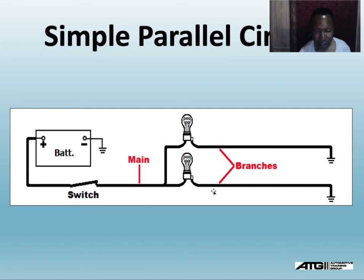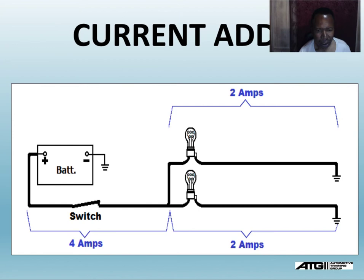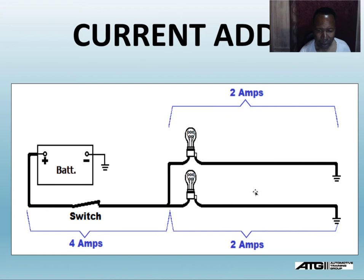As the current travels, each branch takes a certain amount of amps — all depending on the resistance. For example, four amps leave the battery; this leg takes two amps and this leg takes two amps, so they have equal resistance and the same amperage. If I put an amp meter here in series, it reads four amps; an inductive meter here also reads four amps — that's the main line leaving the battery.